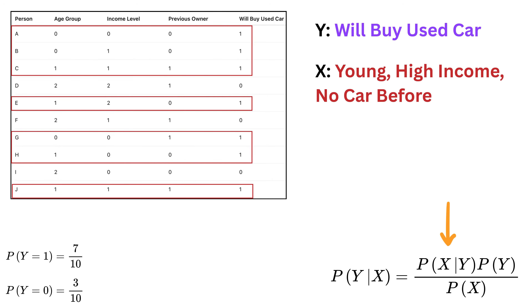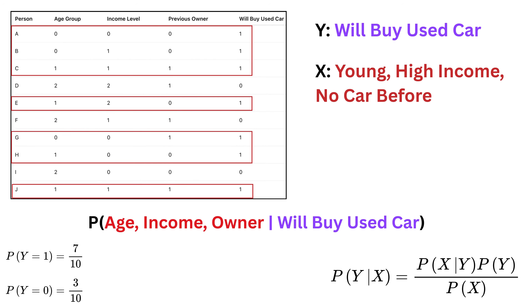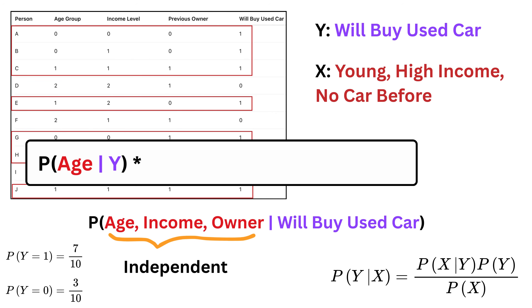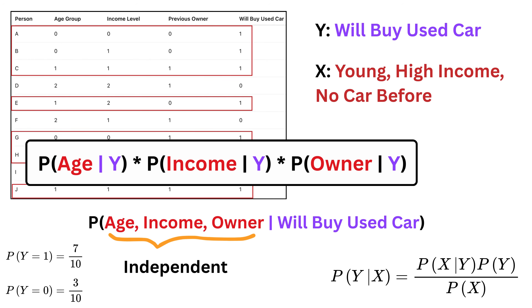Next, we calculate P of X given Y — the probability of the features given the outcome. This means P of age group, income level, and previous owner given the value of 'will buy used car.' This algorithm works by assuming all features are independent of each other when we already know the outcome. So P of X given Y becomes: P of age group given will buy used car, multiplied by P of income level given will buy used car, multiplied by P of previous owner given will buy used car.